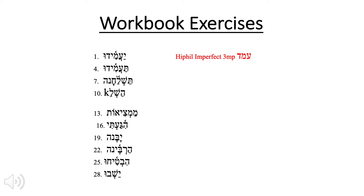What about number four? Number four is just like number one, except that we have a tav prefix instead of a yod prefix. So instead of a 3mp, this is a 2mp, again with the shuruq at the end. We still have the patah under the tav, and we have the compound shwa instead of the simple shwa underneath the ayin.